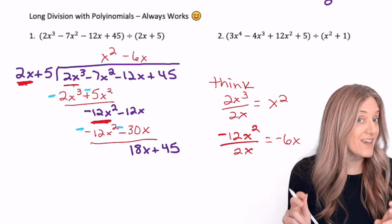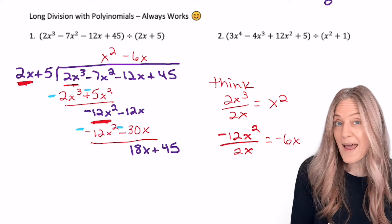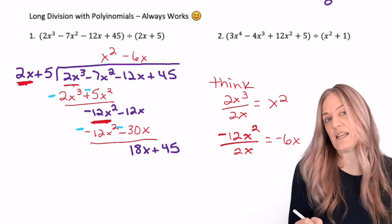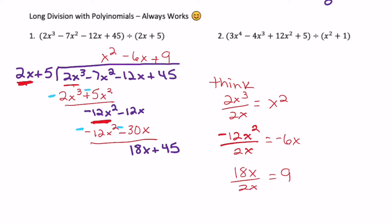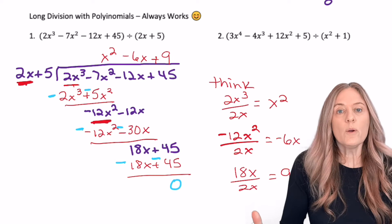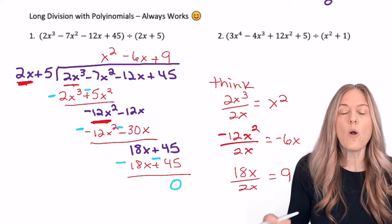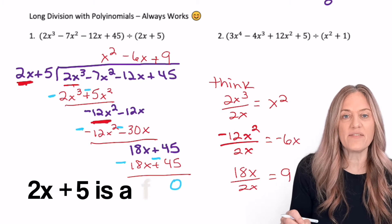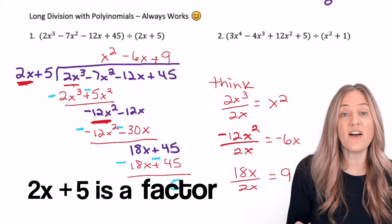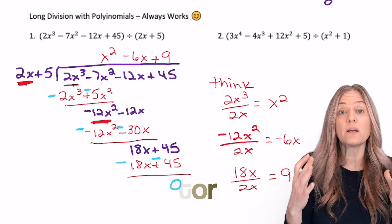And now we're almost done. 2x plus 5 into 18x plus 45. We think: how many times does 2x go into 18x? That's going to be 9. Remainder 0 — there's nothing left over. What does that tell us about 2x plus 5? It tells us that 2x plus 5 is a factor of that larger cubic polynomial.